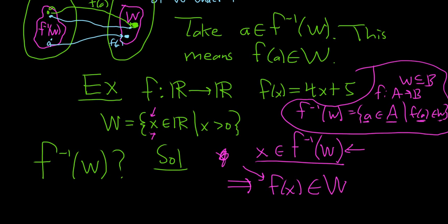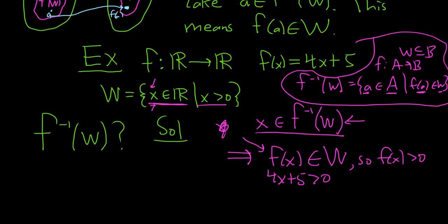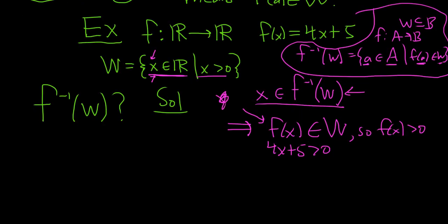So W is this set here, right? So that means f of x is positive. Well, f of x is 4x plus 5. So that means that 4x plus 5 is positive. And we're trying to figure out what x is, right? Because we care about x being in this set here. So you just solve for x. You subtract 5 and then divide by 4. So x is bigger than negative 5 fourths.